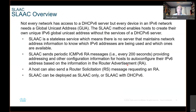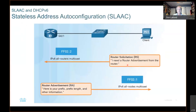SLAAC can also be deployed as SLAAC only or SLAAC with DHCPv6 — that's when the O flag is enabled. SLAAC stands for Stateless Address Auto Configuration. That's the only time you see those words next to SLAAC; from this point on, they just give you SLAAC.